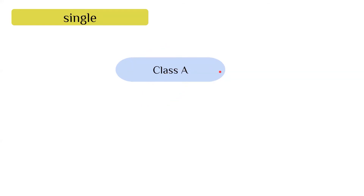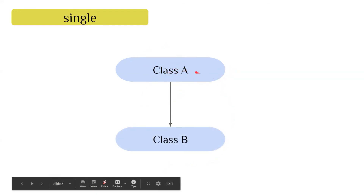In single inheritance, we have class A as the parent class, and class B extends class A. That is just a single level — one parent, one child.